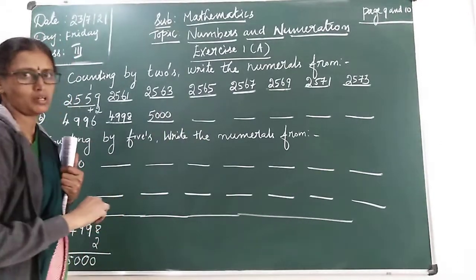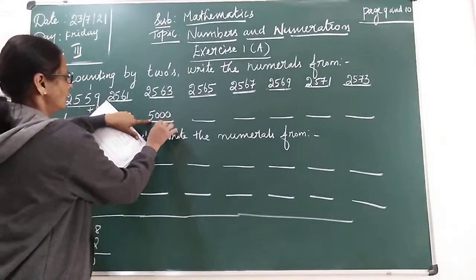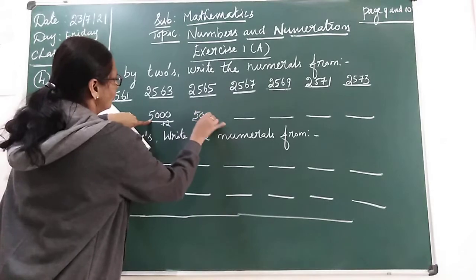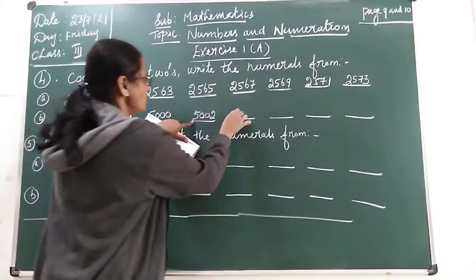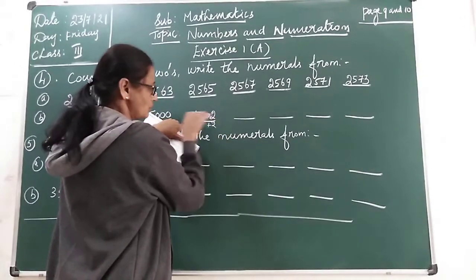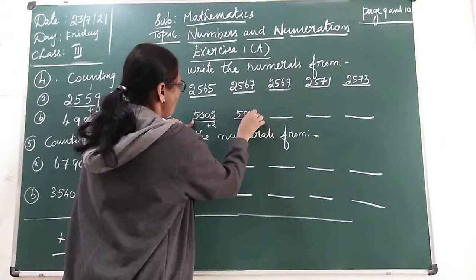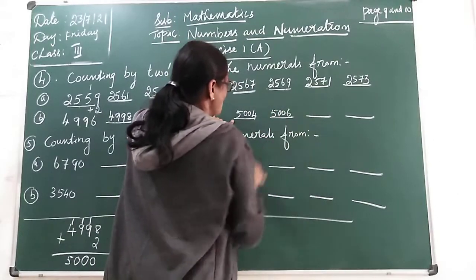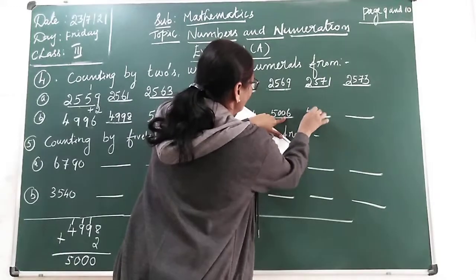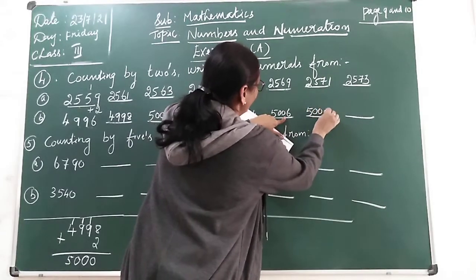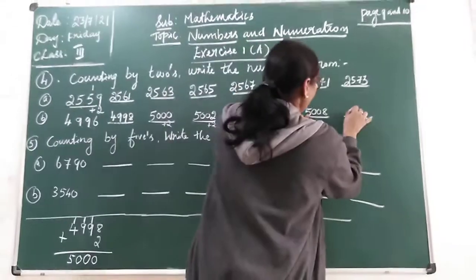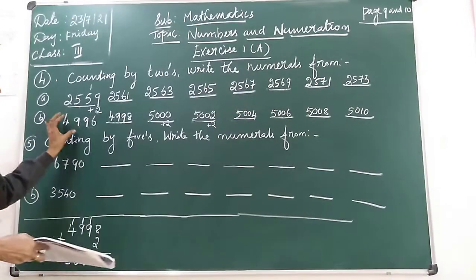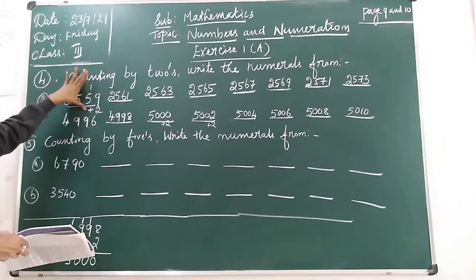Now next number to number. You have to add easily you can do it. So here I add 2. So 5,000, 2. Next number is 5,004. Next number 5,006. Next number 5,008. Next number 5,010. So, you have to add 2. You can write it. So, counting by 2.